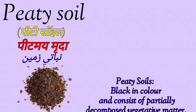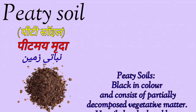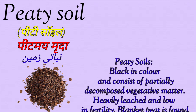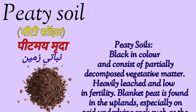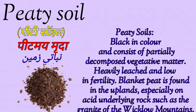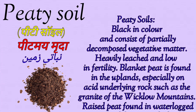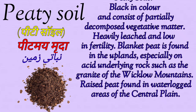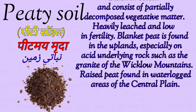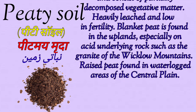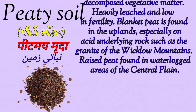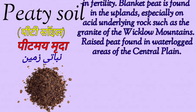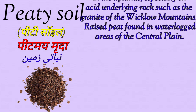Peat soil — in Hindi it is called 'pitme muda' and in Urdu 'abati zameen'. Peat soil is black in color and consists of partially decomposed vegetative matter, heavily leached and low in fertility. Blanket peat is found in upland areas, especially on acid underlying rocks such as granite. Raised peat is found in waterlogged areas of the central plain.